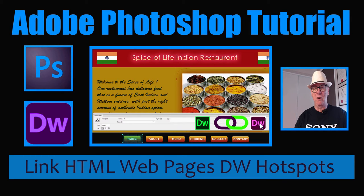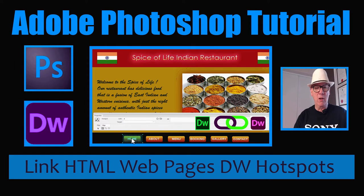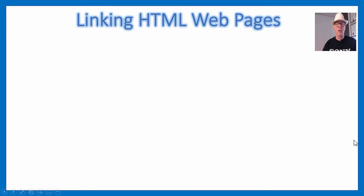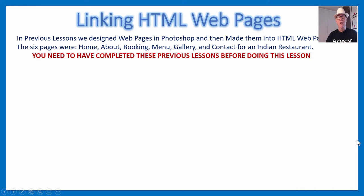If you've got the old Dreamweaver, it's green. The new one is a horrible purple color, but either way they both do pretty much the same thing. We're going to click on buttons and navigate to different pages. So we're going to be linking the web pages together. You need to have done our previous lesson where we made the HTML web pages, because you'll need those to link together.